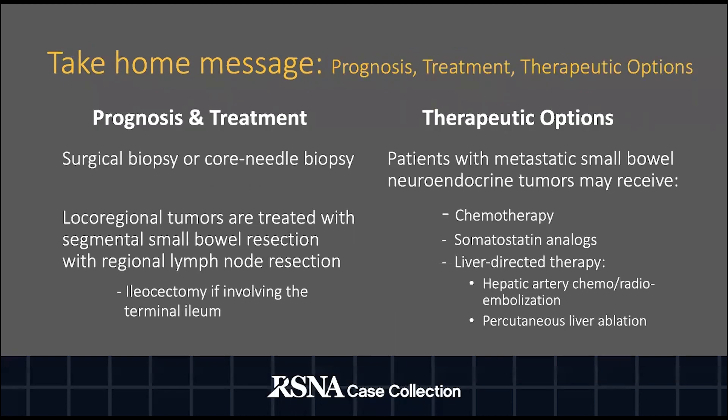Patients with imaging and biochemical findings of small bowel neuroendocrine tumors will typically undergo surgical biopsy or corneal biopsy. Local regional tumors can be treated with local resection of the small bowel and regional lymph nodes. Patients with metastatic tumors are shown to have favorable prognosis due to various therapeutic options including chemotherapy, somatostatin analogs, and liver-directed therapy.